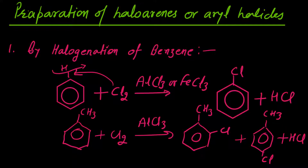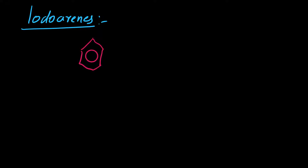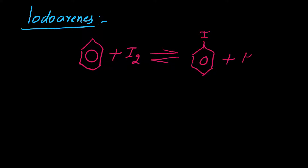अब iodination — अगर हम iodobenzene की preparation करना चाहें तो थोड़ा difficult होता है, क्योंकि iodine के साथ benzene का reaction reversible होता है जैसा alkanes में discuss किया था। Benzene को जब हम iodine के साथ react करते हैं तो reversible reaction देता है जिसमें iodobenzene की formation तो होती है, लेकिन byproduct के रूप में HI बनता है। यह HI strong reducing agent होता है, तो यह iodobenzene के साथ react करके benzene की formation कर देगा। इसलिए इस reaction को oxidizing agent जैसे iodic acid और nitric acid के साथ treat करते हैं।